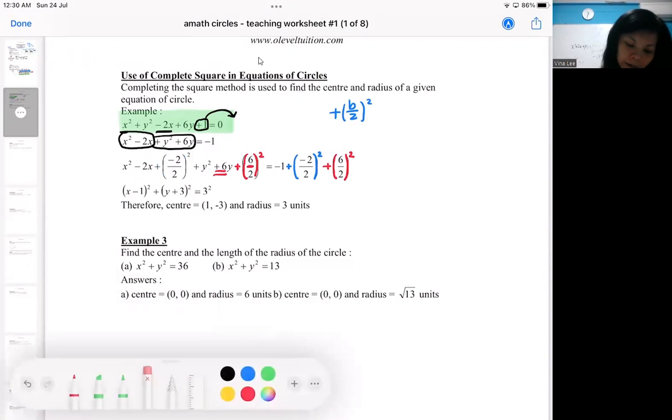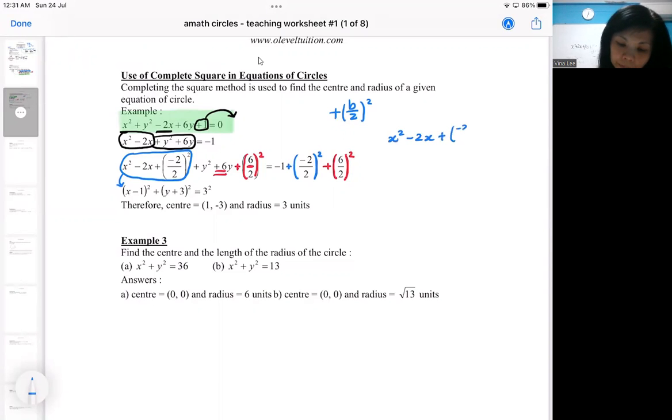And this is the part where you will have a completed square. So observe this part. If you simplify this part, it can be factorized.